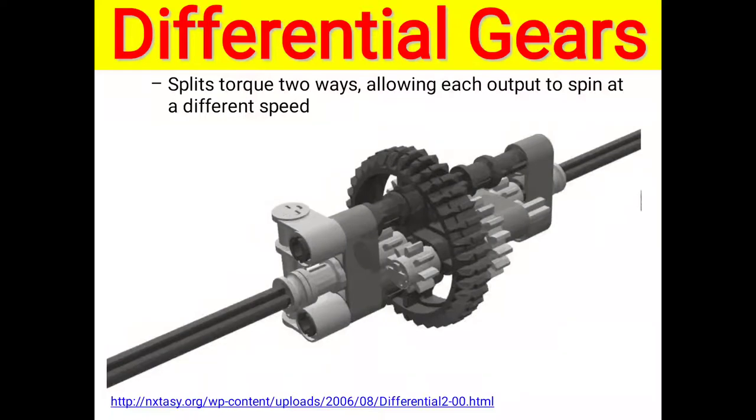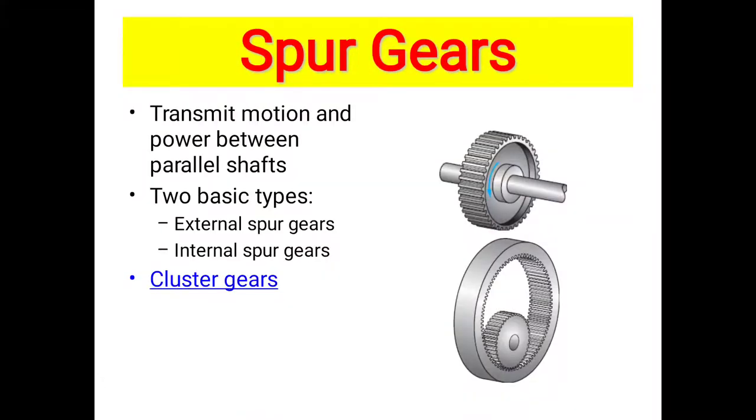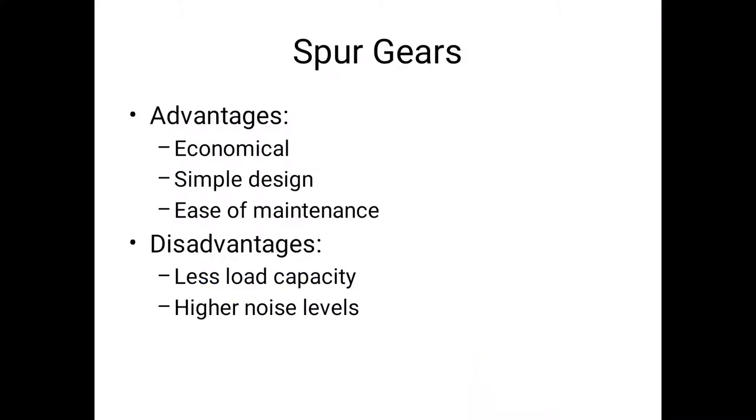Differential gear: used in tractor differential systems. Split torque in two ways, allowing each output to spin at different speed. Spur gear transmits motion and power between parallel shafts. Two basic types: internal spur gear, external spur gear, and cluster gears. Here are external gear examples and internal spur gear examples.